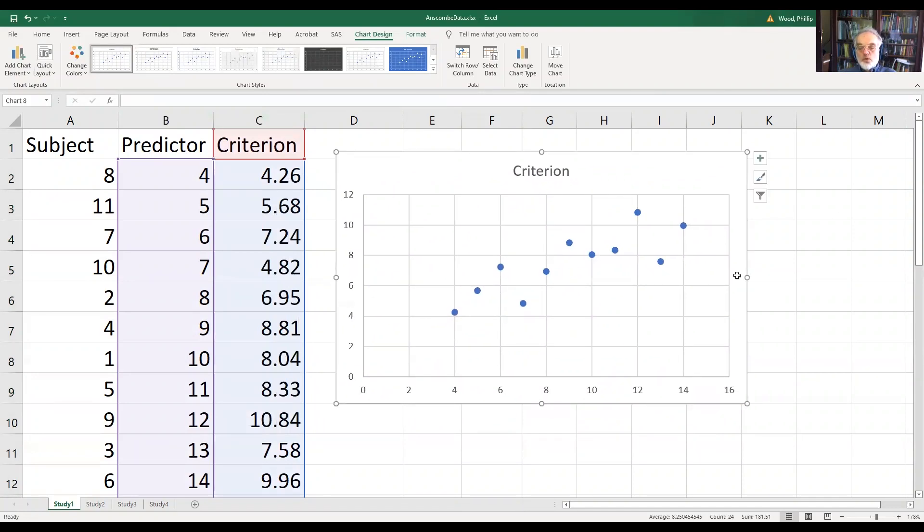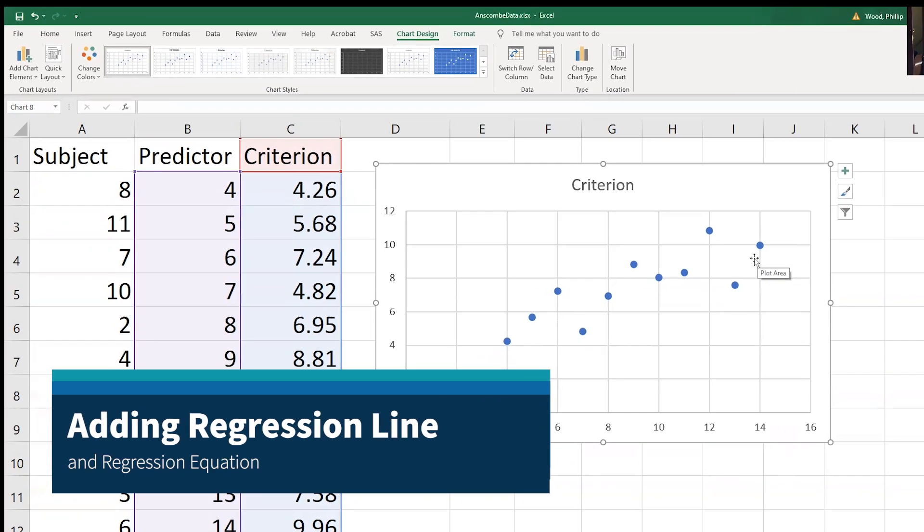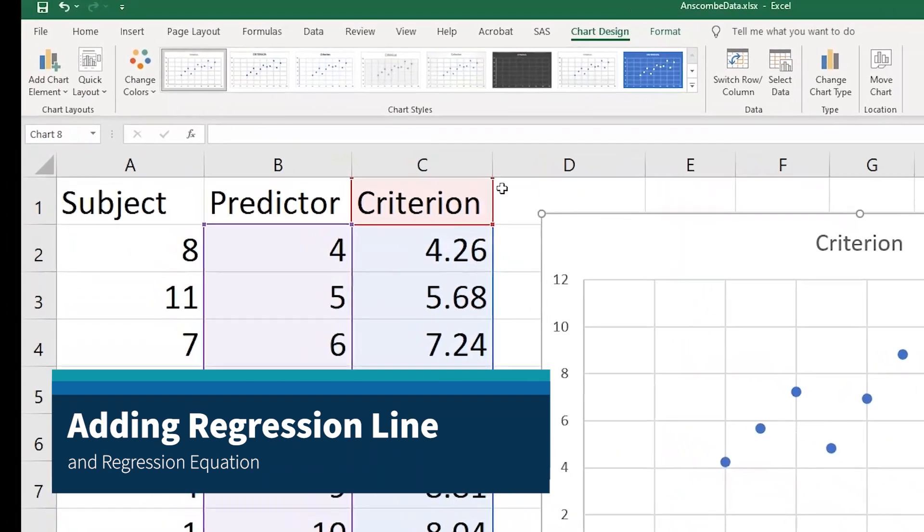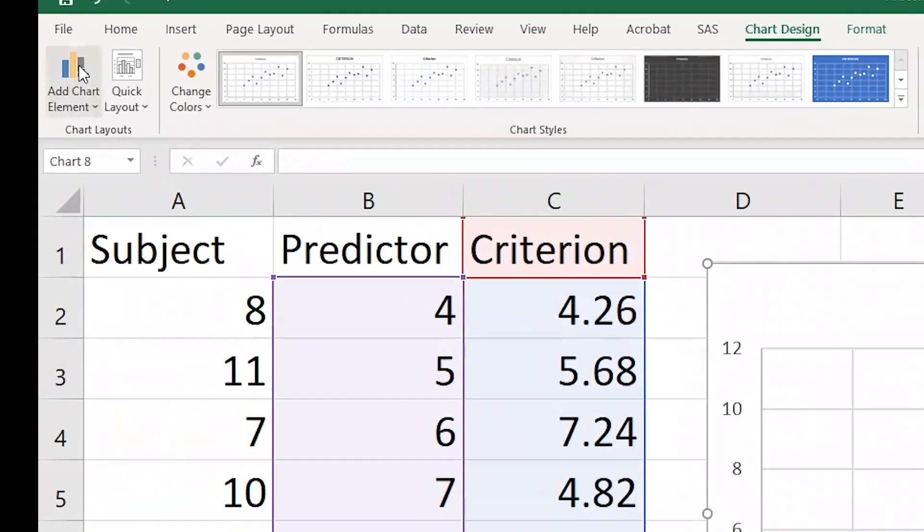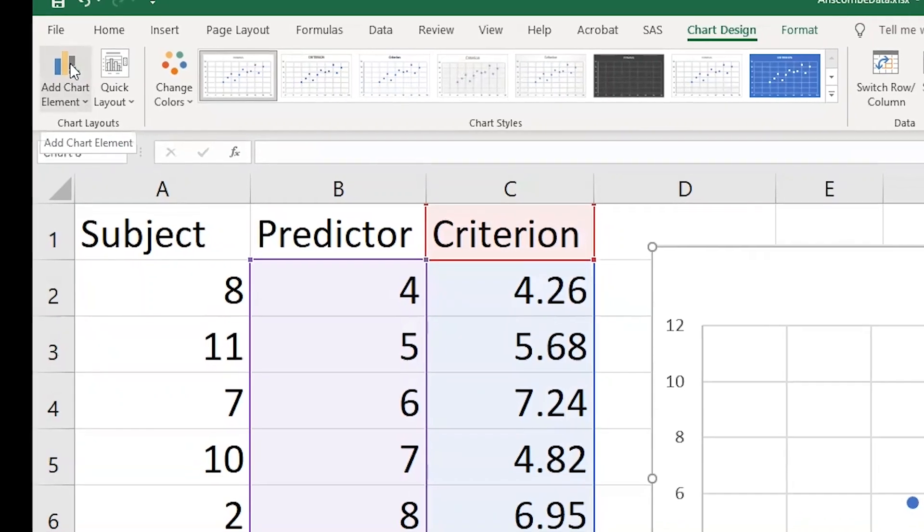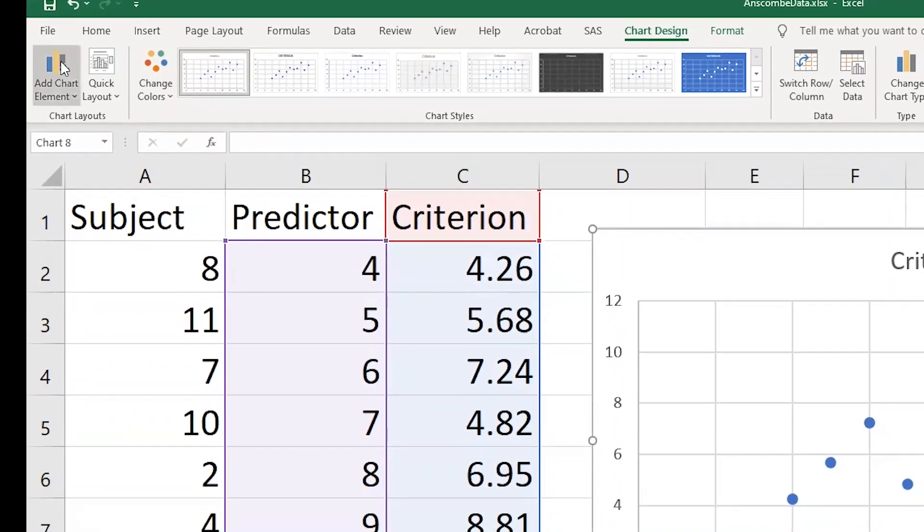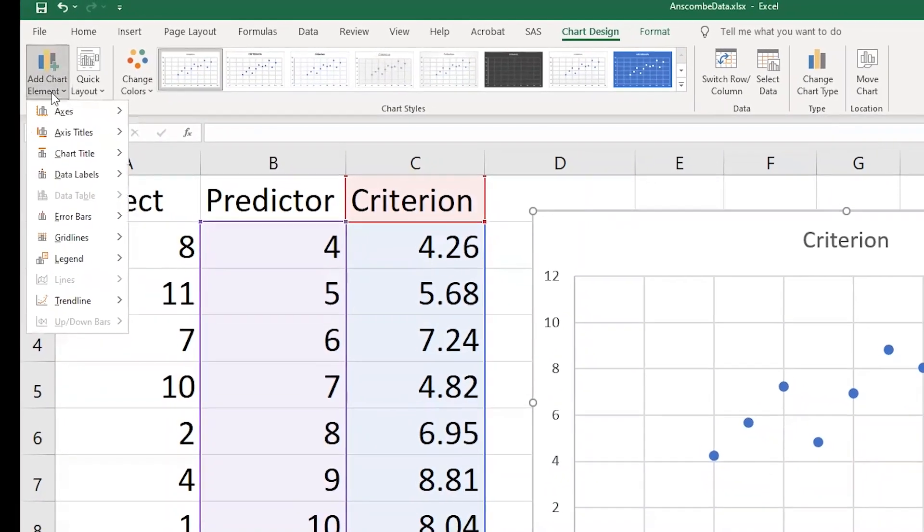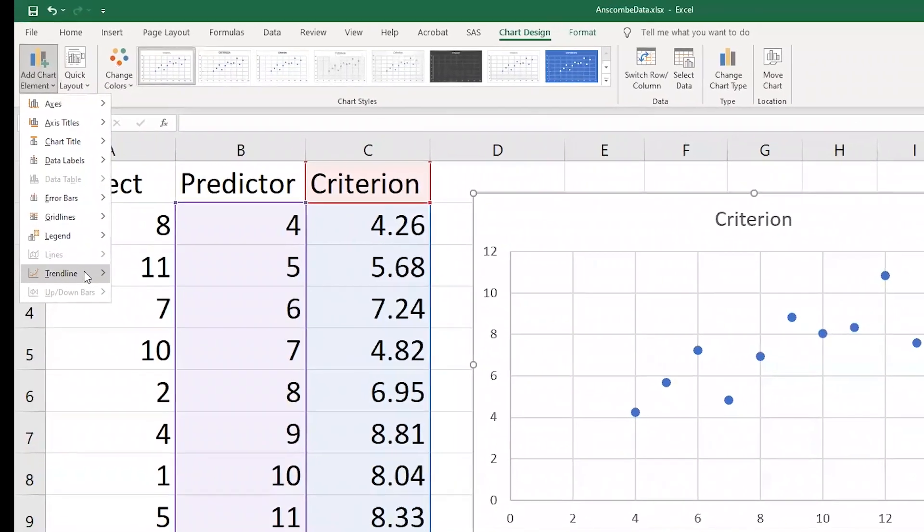From this, even though we have only a few observations, you can see there's a positive relationship going on there. If we want to see the regression line and actually look at what the formula for the regression line is, that's also pretty easy. We come over here to the far left corner in the upper hand and select add chart element, and come down here and select the trend line option.